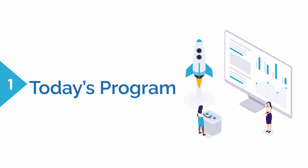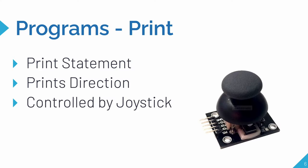Next, let's check out some programs that you can do, including today's program we're going to do in the demo. The first program is called print — we're going to have a print statement and the joystick will be controlled by our finger. It'll print whatever direction the joystick is in. So if your finger moves the joystick up, it'll print 'up'; if down, it'll print 'down' — whatever angle or direction you move it.